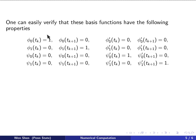One can easily verify that these basis functions have the required properties. For phi_0, its value at t_k is 1, and its value and derivative at all other knots are 0. For phi_1, a similar property holds: all values are 0 except the function value at t_{k+1}, which is 1.